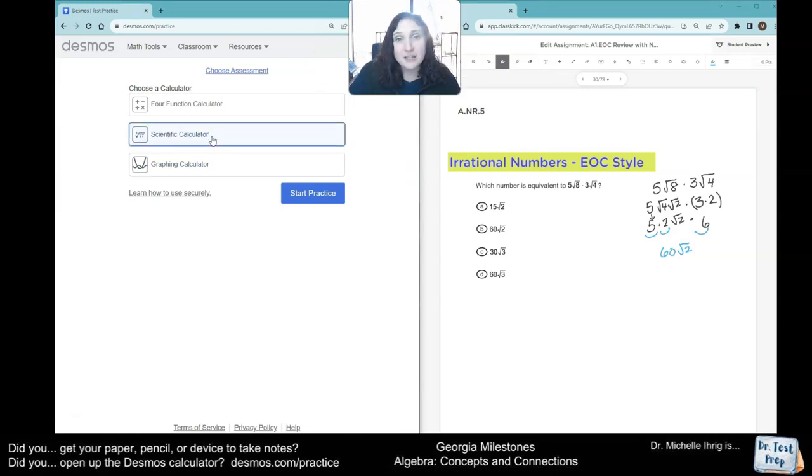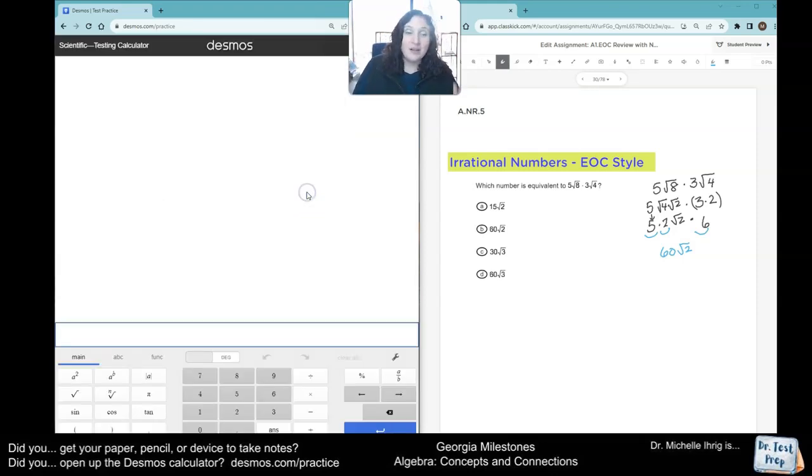We go to the scientific calculator, and we turn these irrational numbers into decimals. Because on the day of the test, it might not be that easy, or you might have a brain freeze. So you want to use the calculator. First, we're going to just type in the problem. Five square roots of eight. Click off so you can get the multiplication sign. Three square roots of four. Double check you typed everything in correctly. And we know that the decimal equivalent is approximately 84.85.